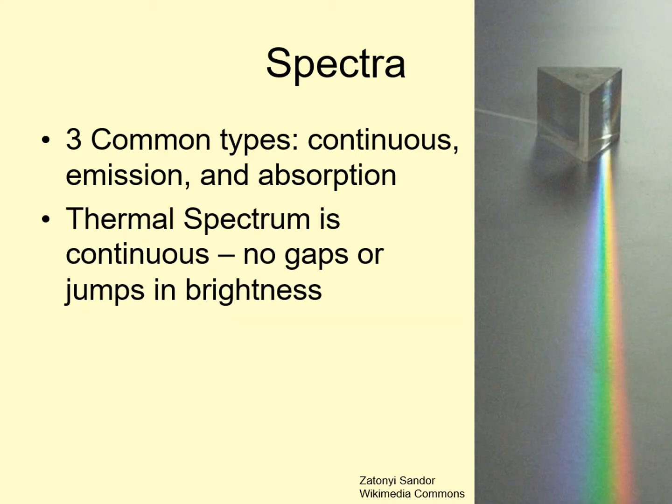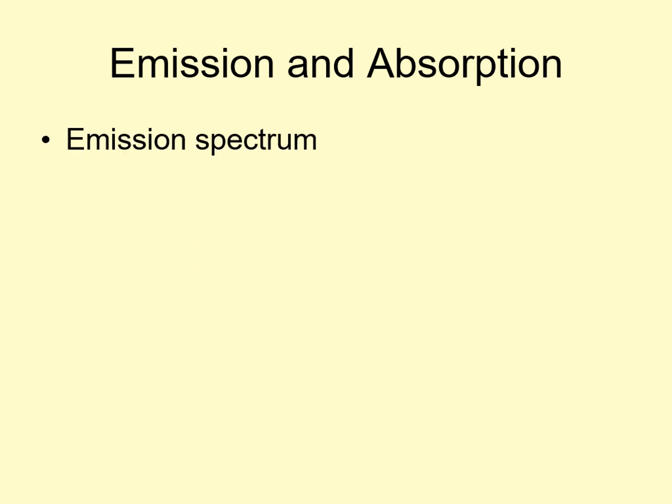A continuous spectrum is one that goes through a series of colors with no gaps or jumps. Thermal radiation is the most common example of a continuous spectrum. Even though thermal radiation is emitted light, it doesn't produce what we call an emission spectrum. Emission spectra are produced when you heat up a thin, transparent gas.